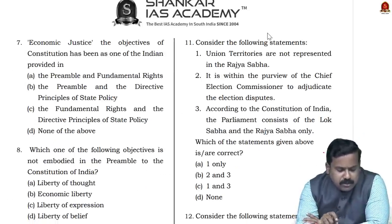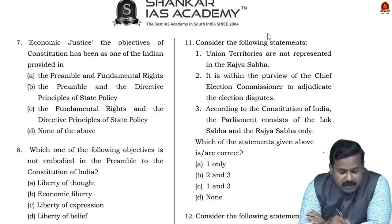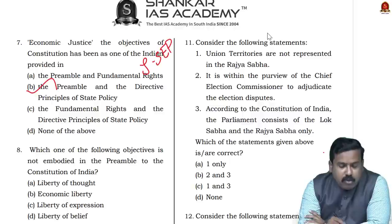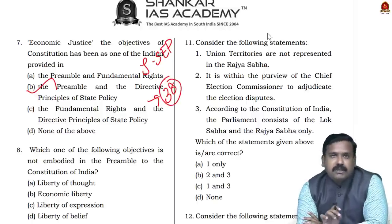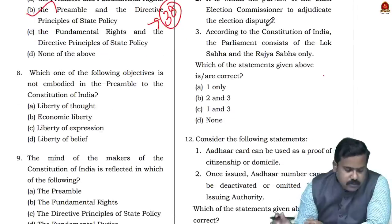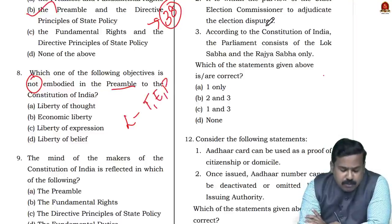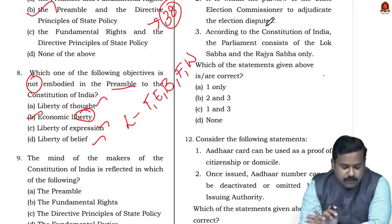Another easy question: Economic justice as an objective of the Indian Constitution is provided in the Preamble — which mentions justice: social, economic, political — and also in Article 38 of the Directive Principles. The question asks which objective is NOT embodied in the Preamble. With respect to liberty, the Preamble mentions liberty of thought, expression, belief, faith, and worship — but economic liberty is not mentioned. So the answer is economic liberty.